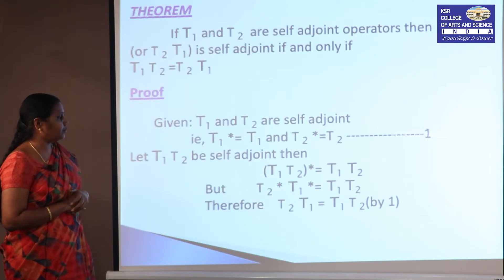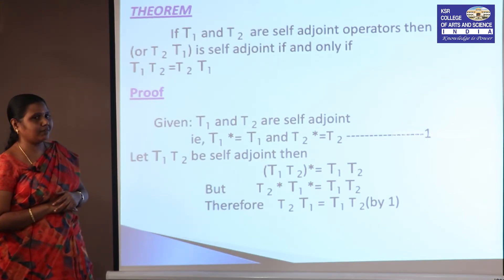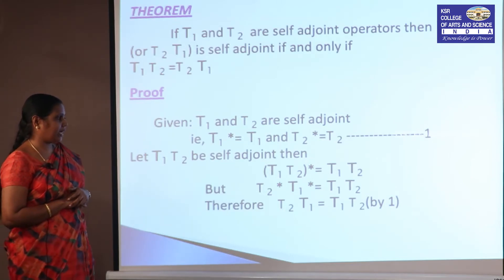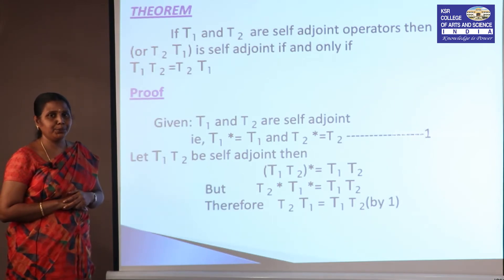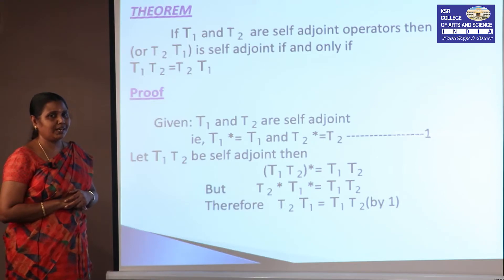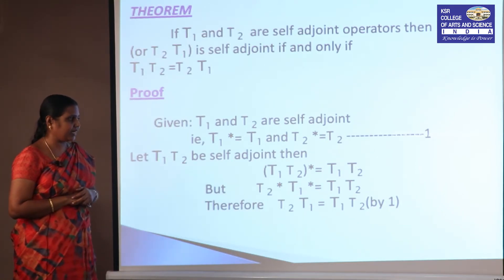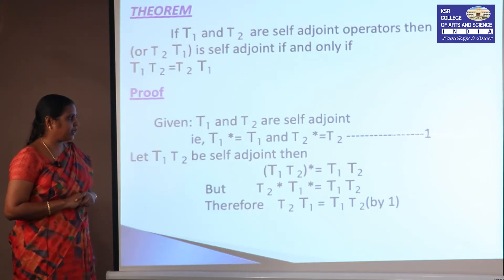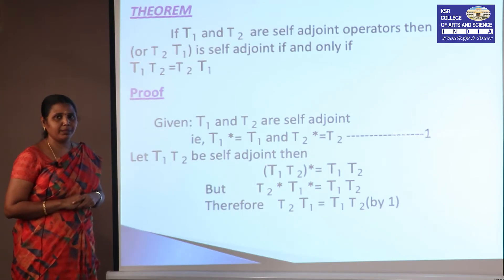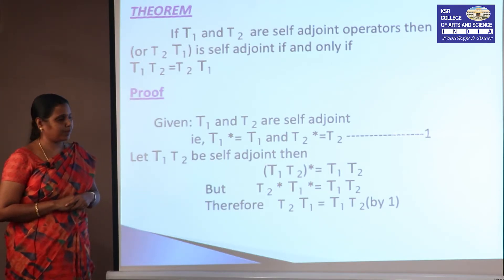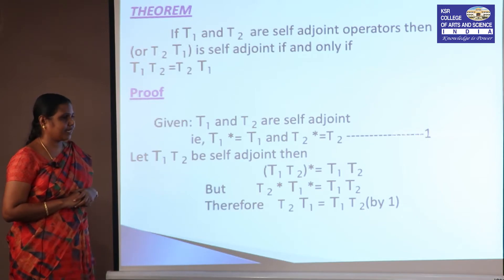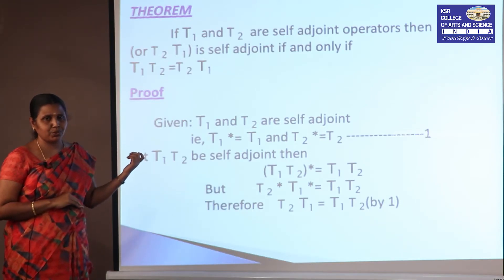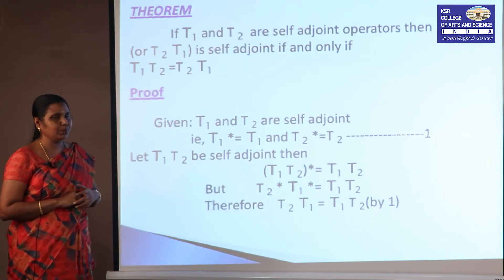Assuming T₁T₂ is self-adjoint means (T₁T₂)* = T₁T₂. Using the property (AB)* = B*A*, the left-hand side becomes T₂*T₁*. Applying equation 1, T₂* is replaced by T₂ and T₁* by T₁, giving T₂T₁ = T₁T₂. Case 1 is proved.